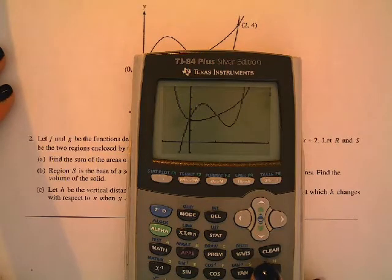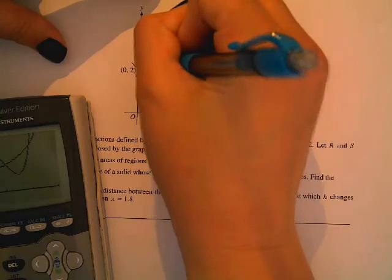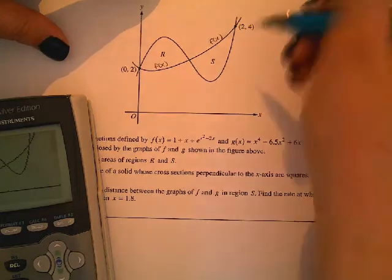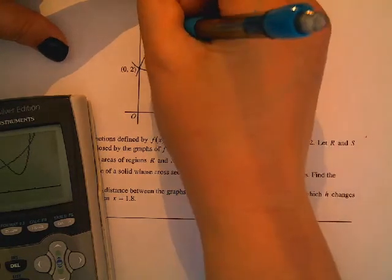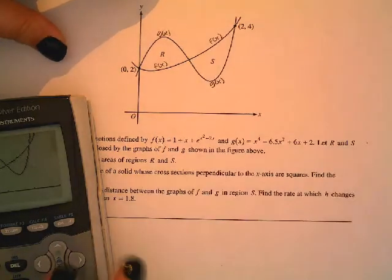So F of X was the first graph, so here we have F of X. The reason that I know that is because I typed it in first and I watched it be drawn first, so that was helpful. And then G of X, G of X. Okay.